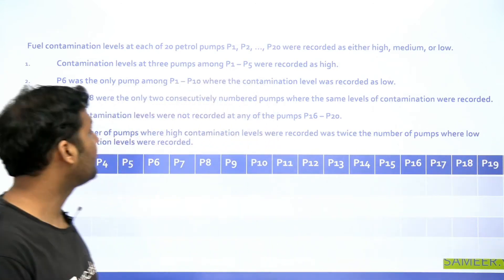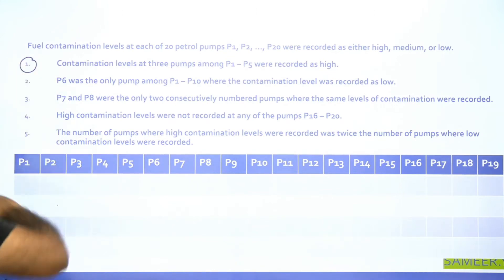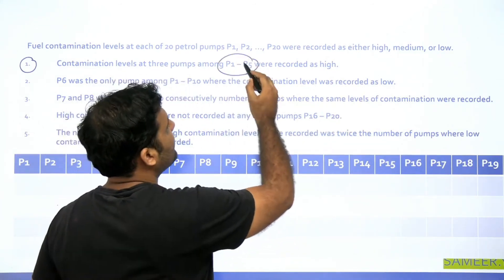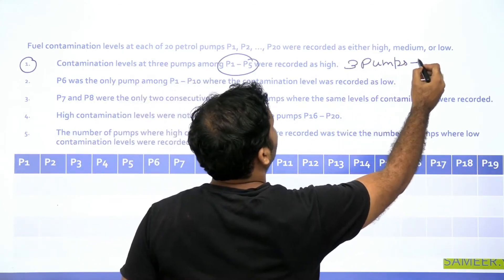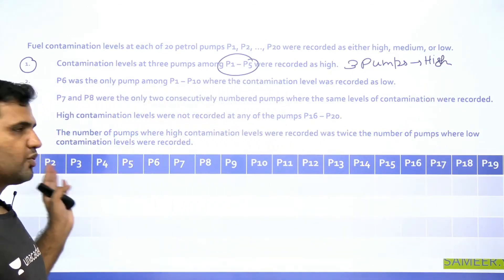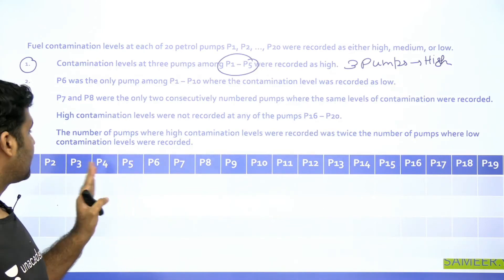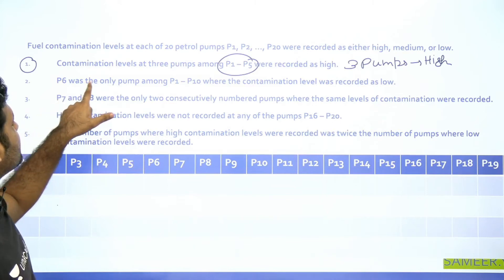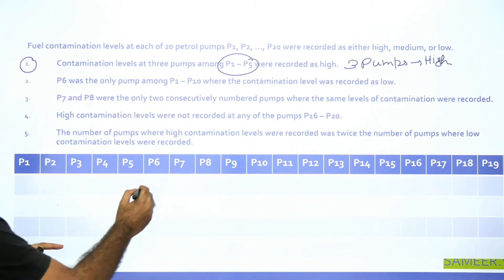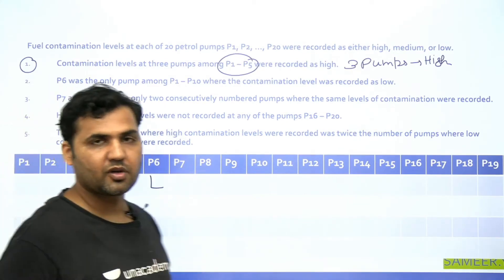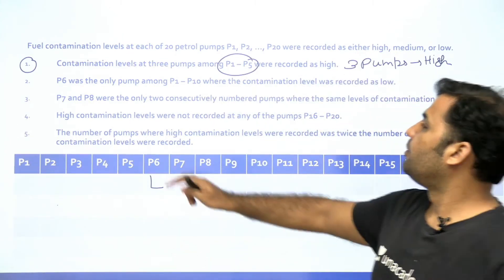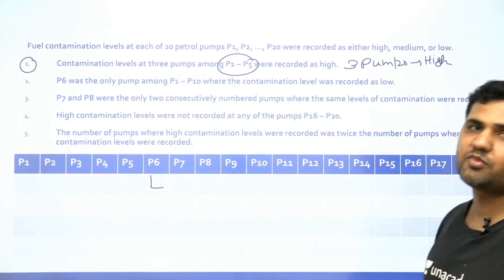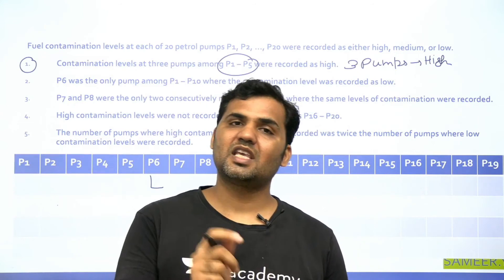Let's solve the CAT 2018 petrol pump set. Write all pumps P1 to P20 and start filling information. Clue 1: three pumps among P1 to P5 had high contamination level. Clue 2: P6 was the only pump among P1 to P10 where contamination was low — fill P6 as low directly. Clue 3: P7 and P8 were the only two consecutively numbered pumps where the same contamination level was recorded, meaning no other consecutive pair has the same level.